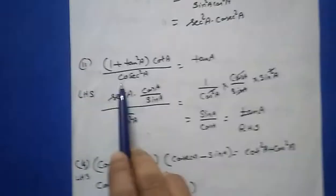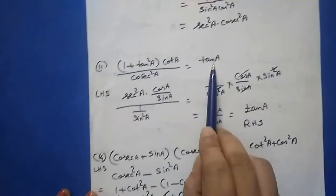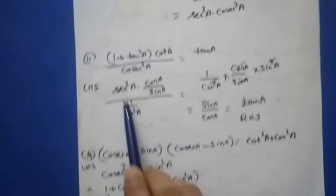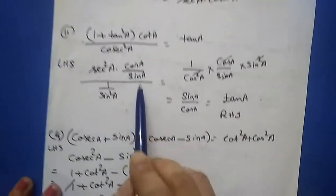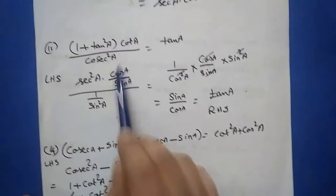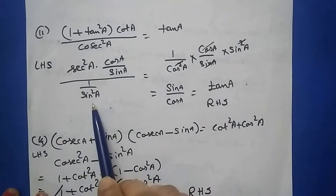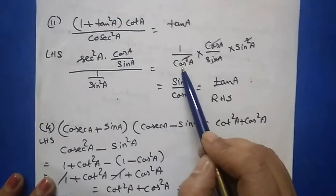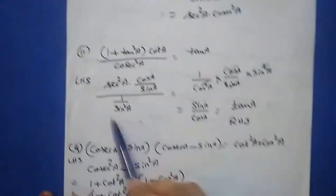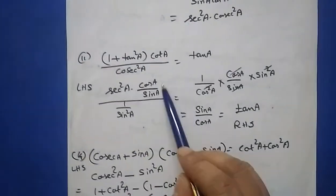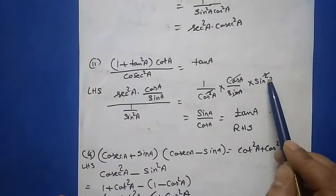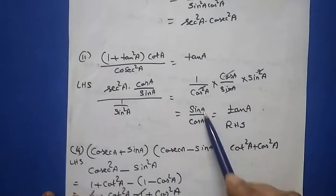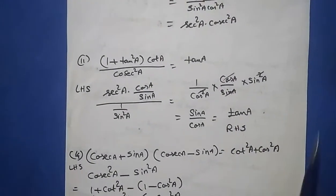Question eleven: (1 + tan²a)·cot a / cosec²a = tan a. Since 1 + tan²a = sec²a directly, write sec²a = 1/cos²a, cot a = cos a/sin a, and cosec²a = 1/sin²a. So you have (1/cos²a)·(cos a/sin a) ÷ (1/sin²a). The denominator's denominator goes to the numerator: sin²a cancels one sin a, and cos a cancels one cos a, giving sin a/cos a = tan a, which is the right hand side.